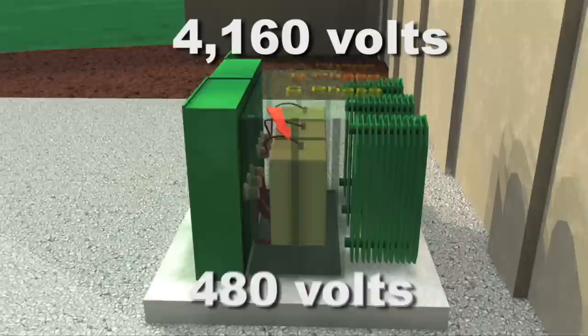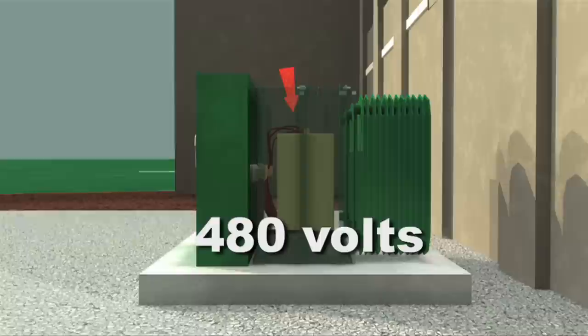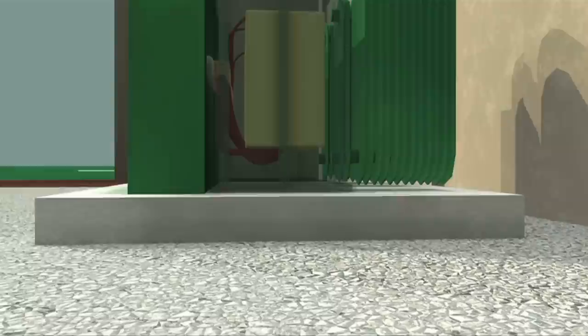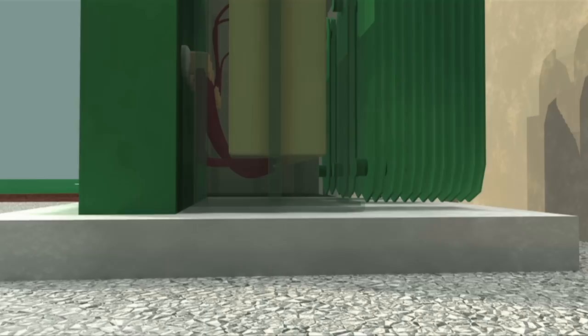The windings in this transformer will step down the voltage to 480 volts. Notice that the incoming wires that are carrying the 4,160 volts are smaller than the wires at the bottom carrying 480 volts. This is because the amperage increases when the voltage is lowered and vice versa. Higher amperage generates more heat and requires larger wires.